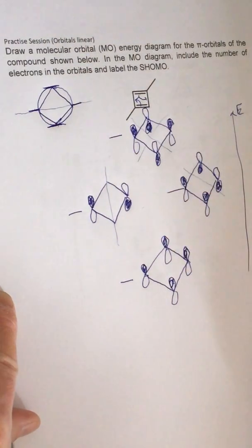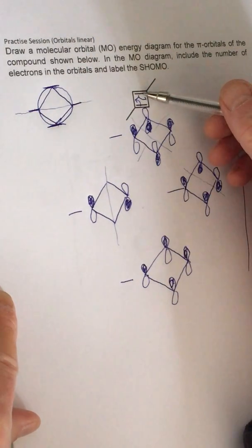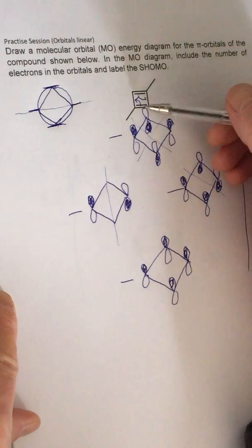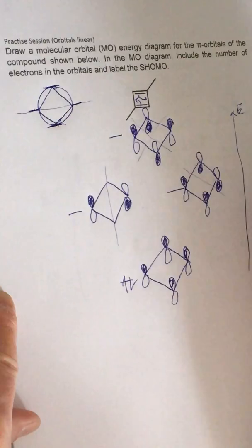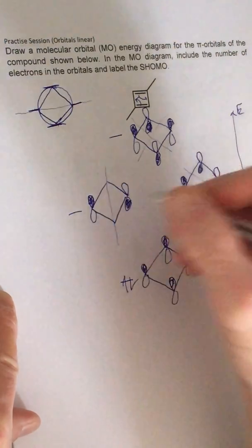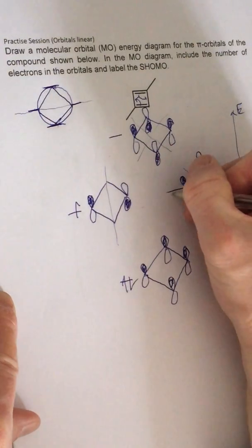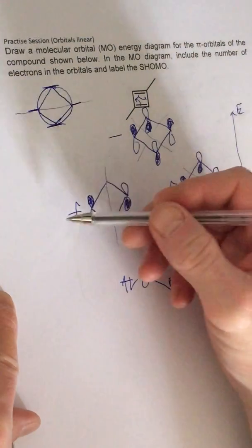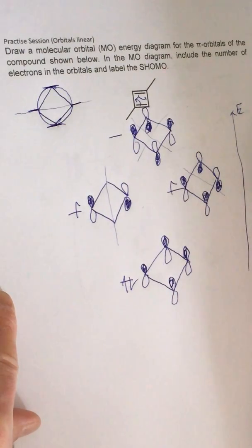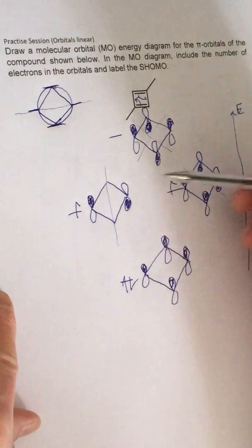Now the number of pi electrons is going to be two in four, so we put two in the bottom one. And remember when we've got two energy levels, orbitals of the same energy, we must fill them up singly first with paired spins.